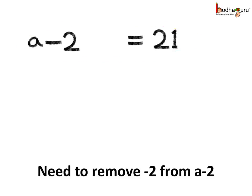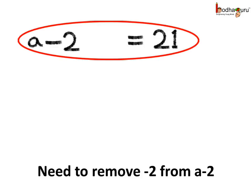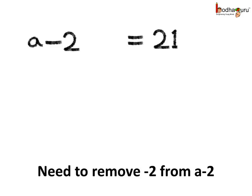Now here we have an equation A minus 2 is equal to 21. Now we need to remove minus 2 from the left hand side. So we add plus 2 to the left hand side. And we also need to add plus 2 on the right hand side to keep the equation balanced.